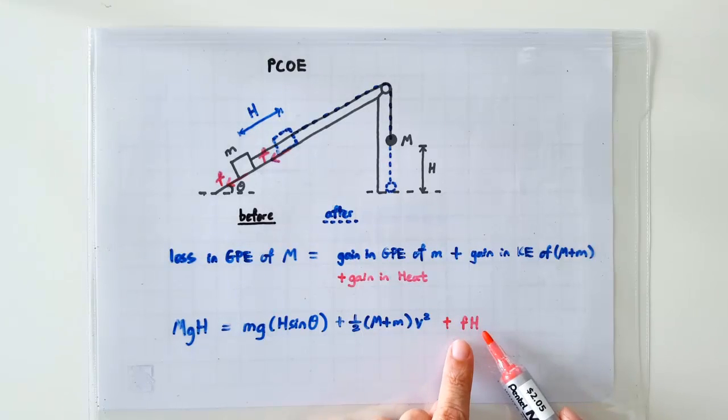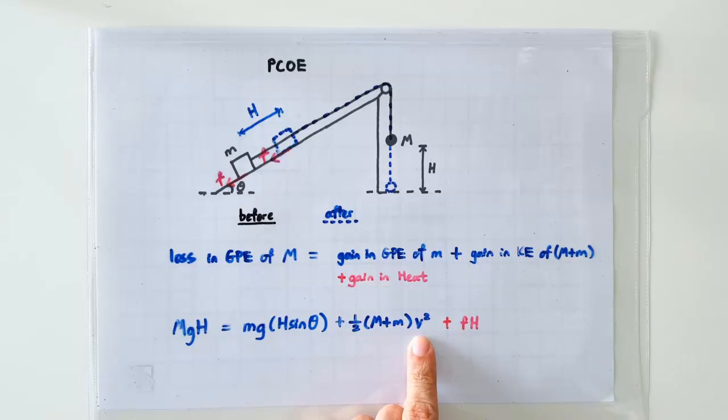When we include a positive number on the right hand side of the equation, it should result in a smaller final speed of the two masses, which makes sense.